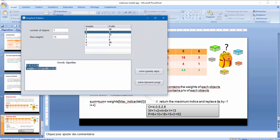Solve greedy. This is the result. The objects are 4, 0, 5, 2, 6. As we see here. And the summation of weights is 13. And the profits is 52.